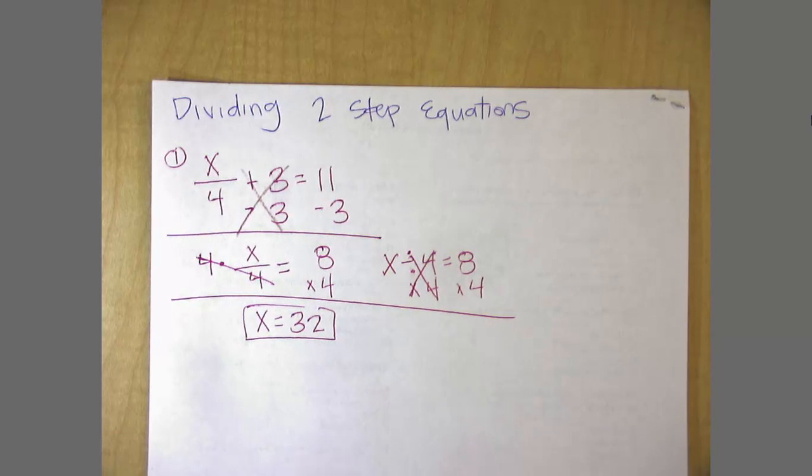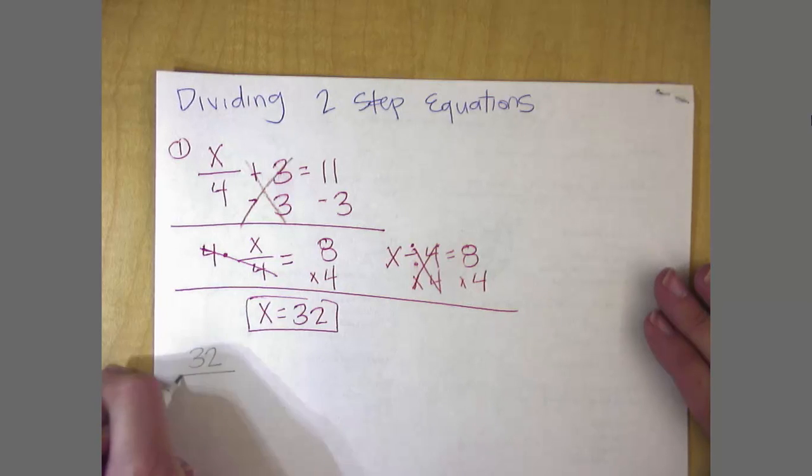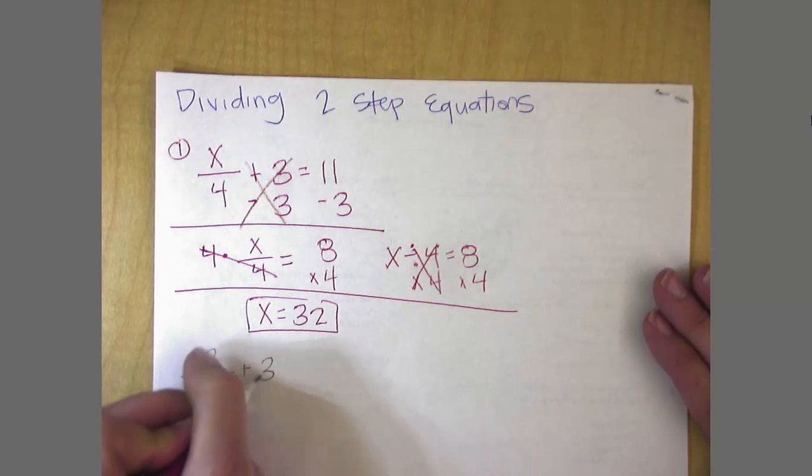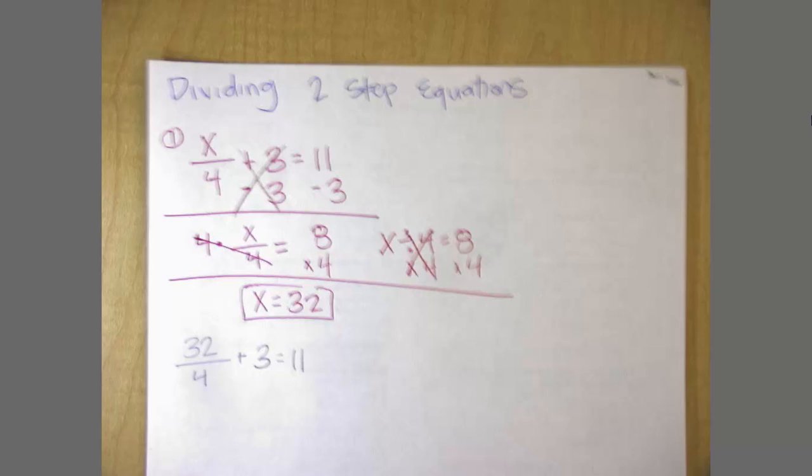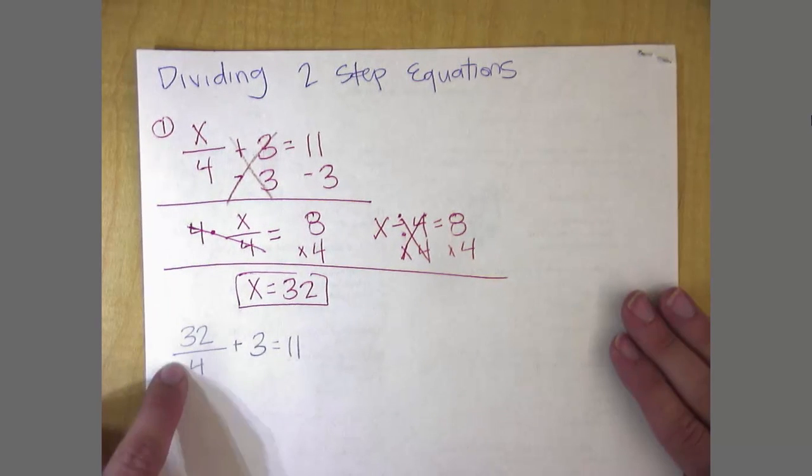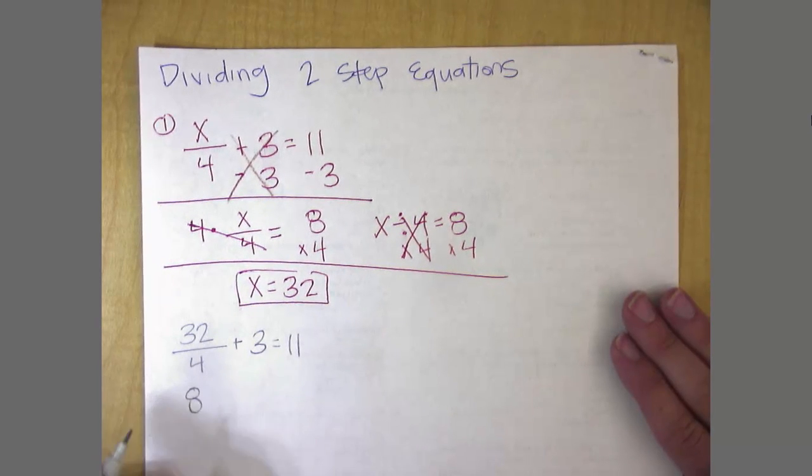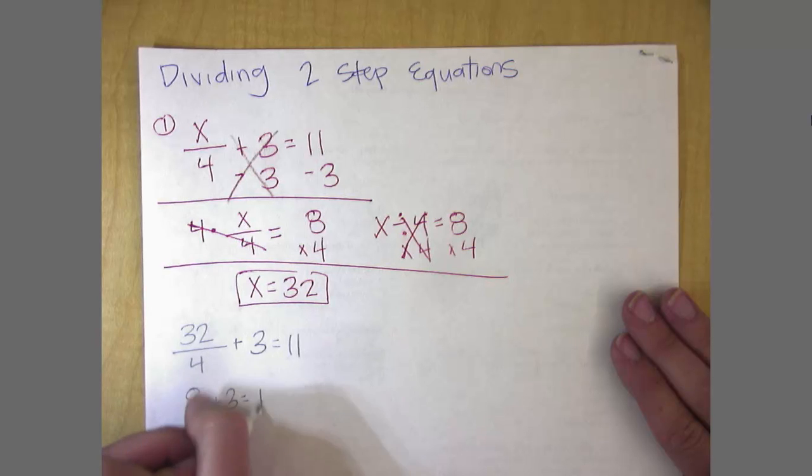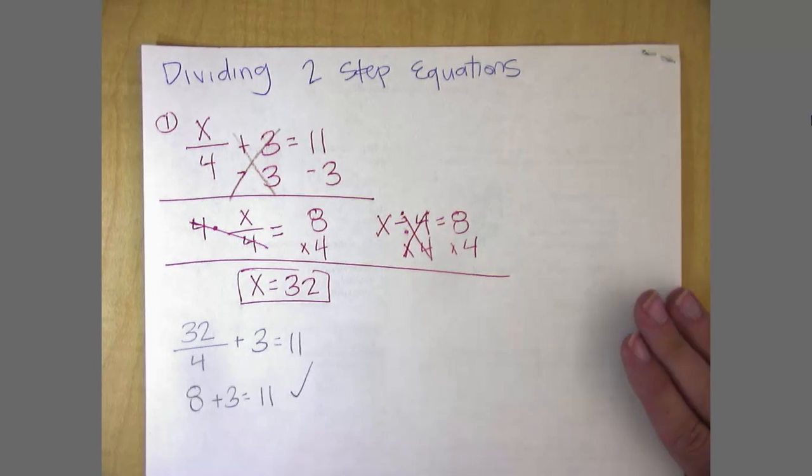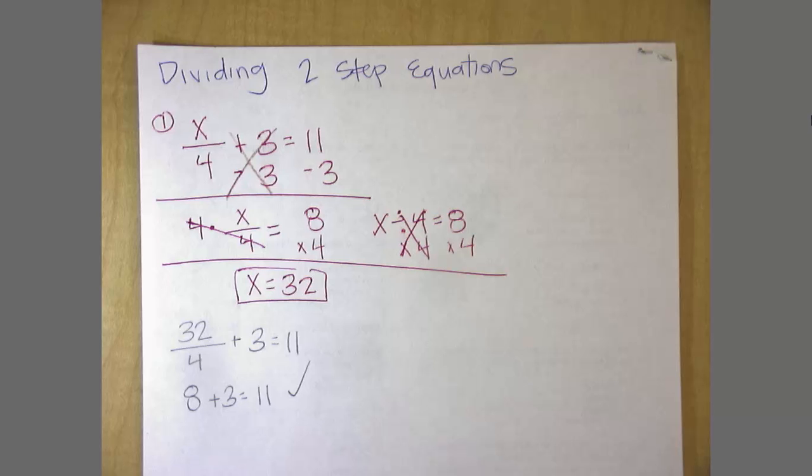Now, obviously, I love to check problems, right? Right? Alright, so what is 32 divided by 4? That gives me 8. And 8 plus 3, does that equal 11? Yes, it does. Good to go.